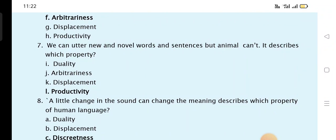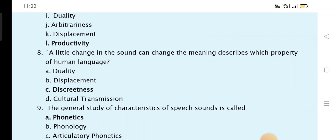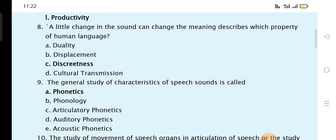You can utter new and novel words and sentences but the animal can't. Which property describes this? Productivity. A little change in the sound can change the meaning describes which property of human language? Discreteness.